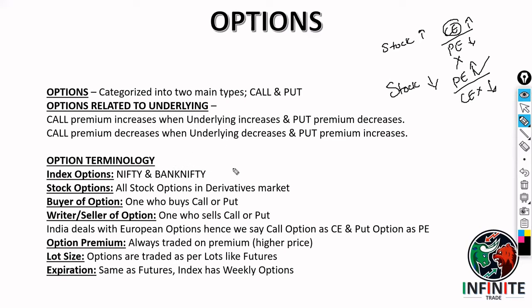Option terminology: index options include indices like Nifty and Bank Nifty; stock options include all stock options in the derivatives market. The buyer of an option is one who buys a call or a put. The seller of an option — also known as the writer — is one who sells a call or a put. India deals with European options, hence we say call option as CE (Call European) and put option as PE (Put European).